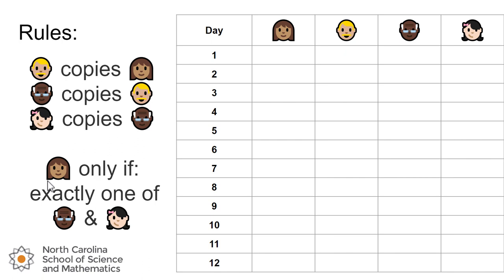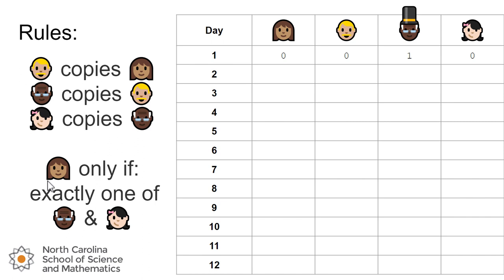We're going to need an initial state for the system. We'll start with the man with white hair and glasses wearing a hat. We're going to keep track in our table whether people are wearing hats or not with ones and zeros. Since he's the only person wearing a hat, we'll put a one in that row and everybody else will have a zero. If we try to predict what's going to happen on day two, the blonde man looks to his left, copies her — she had a zero, so on day two he will have a zero.